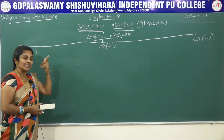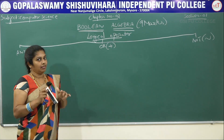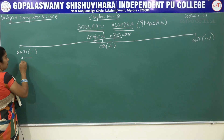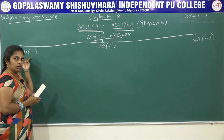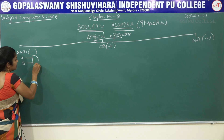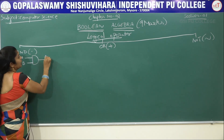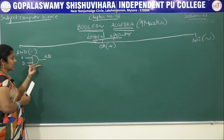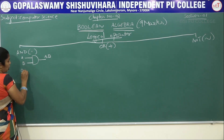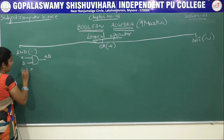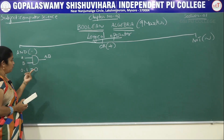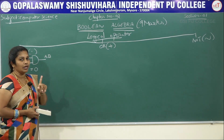For AND, we use a D-shape symbol. Minimum two inputs are required — for example, A and B — and the output is A dot B. In AND operation, if all the inputs are 1, then only the output becomes 1; otherwise it is 0. For example: 0·0=0, 0·1=0, 1·0=0, and 1·1=1.